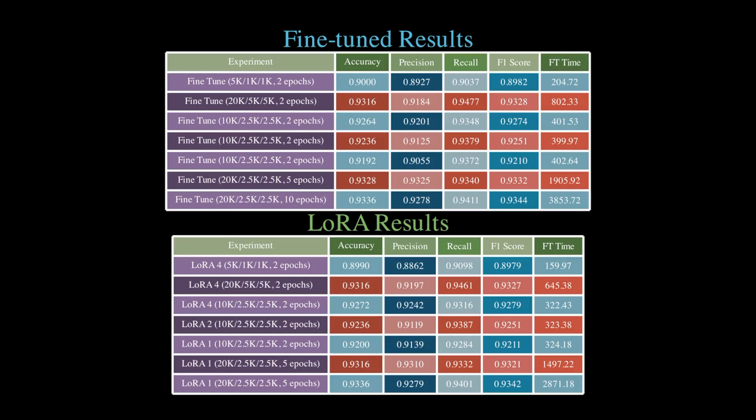For example, for the experiment with 20,000 training samples and two epochs, regular fine-tuning took 802 seconds, while LoRa fine-tuning with four layers took 645 seconds. That's a significant reduction in training time without compromising performance.